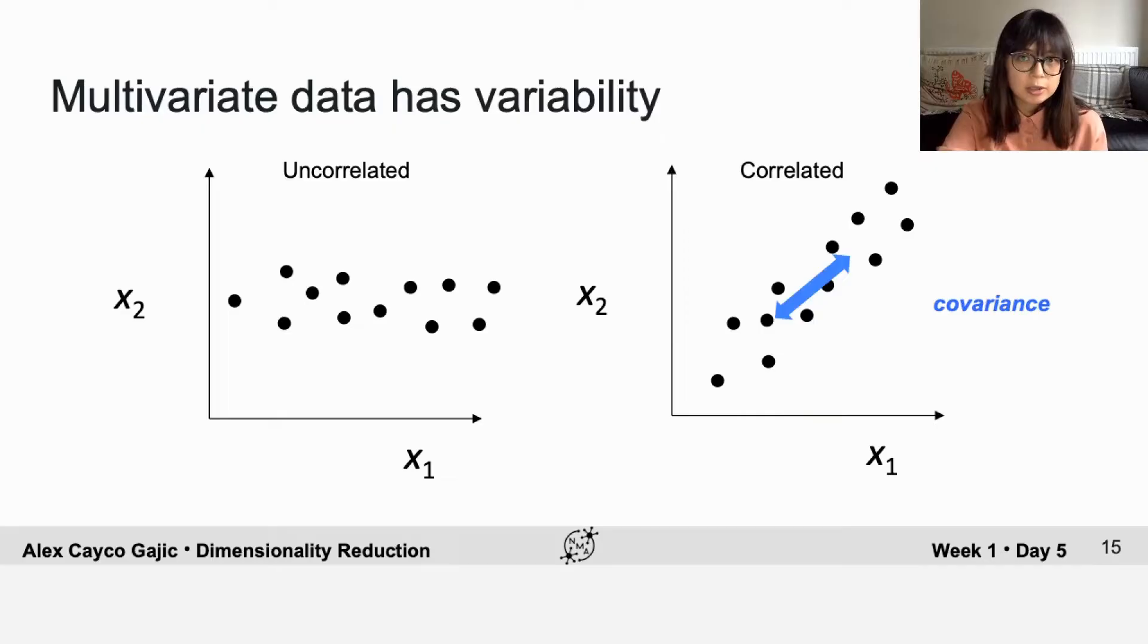The covariance, in contrast, measures the tendency of two neurons to increase or decrease their firing rates together compared to their average values.